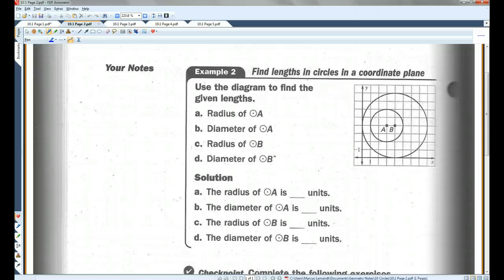Use the diagram to find the given lengths. Radius of circle A. The radius of circle A would be from the center to the side. This would be an example of a radius. It looks like it has two units. The diameter of circle A, well, we'll just continue this all the way. Four units. Another way you could do it is just double the radius. The diameter will always be double the radius.